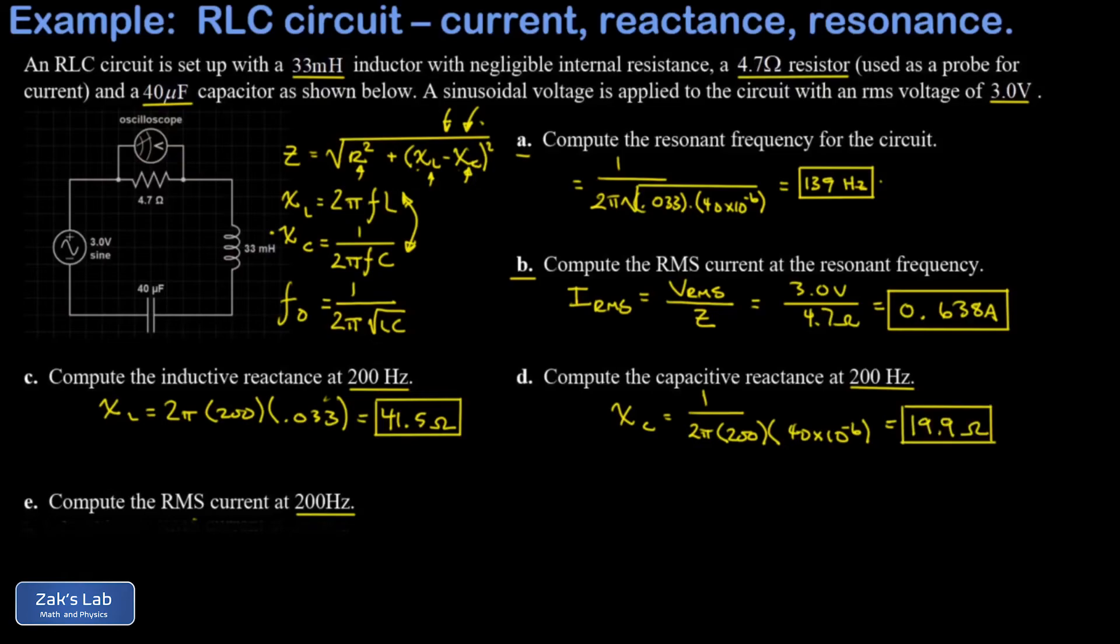And then finally, we want the RMS current when we drive this circuit at 200 Hertz with a three volt signal. So we need to get the total impedance. That's our effective resistance for the circuit. And that starts with R squared. That's 4.7 squared. And then we have this term with the difference of the inductive and capacitive reactances. It doesn't matter what order you put them in because we're going to square it. And when I run the numbers on this, I get 22.1 Ohms.